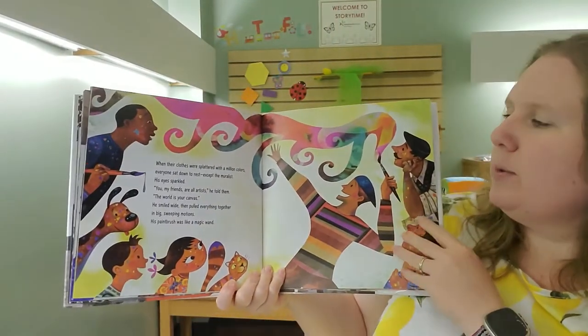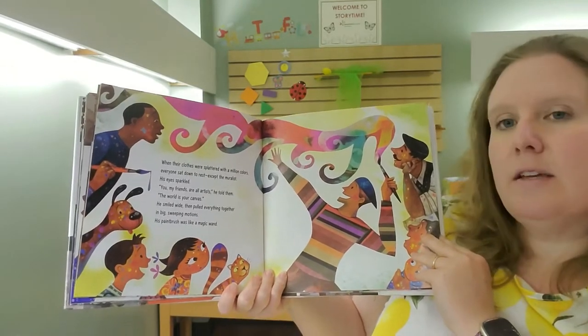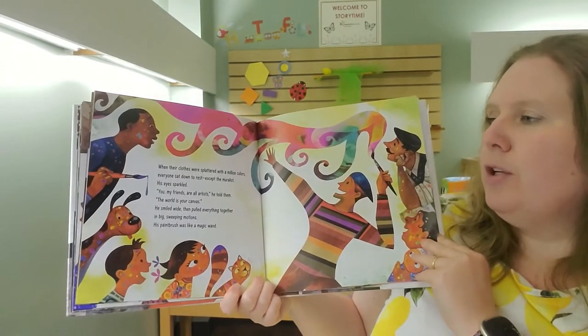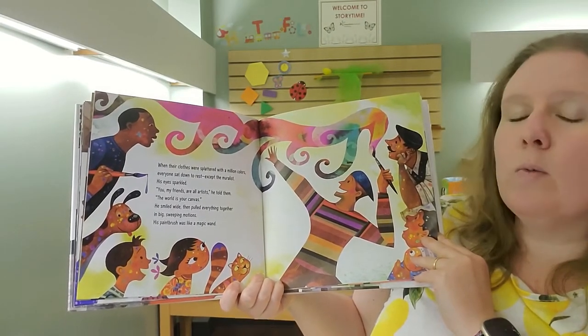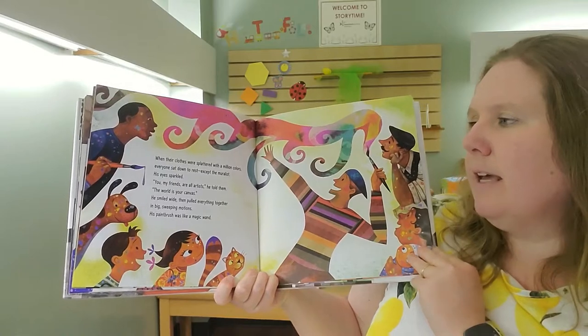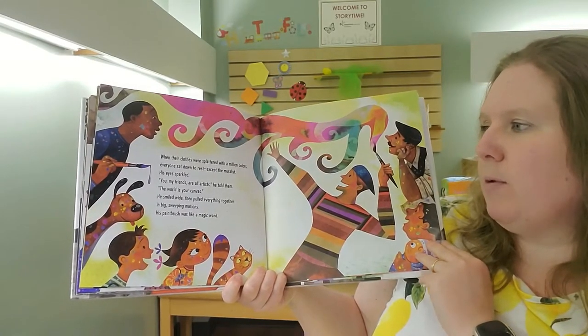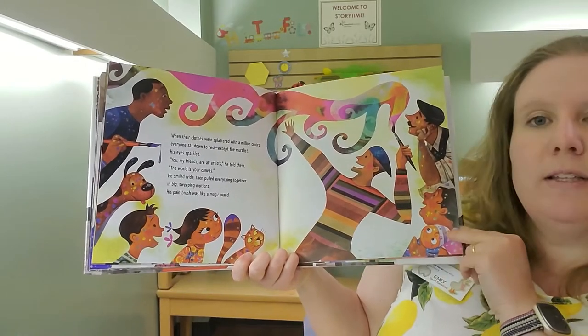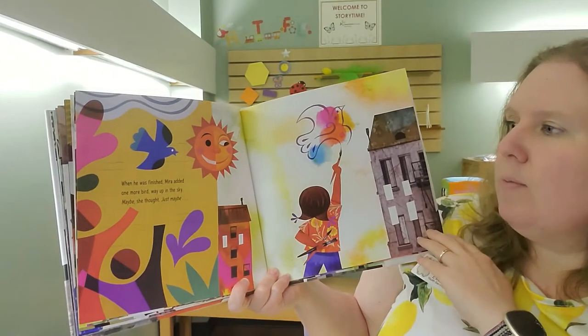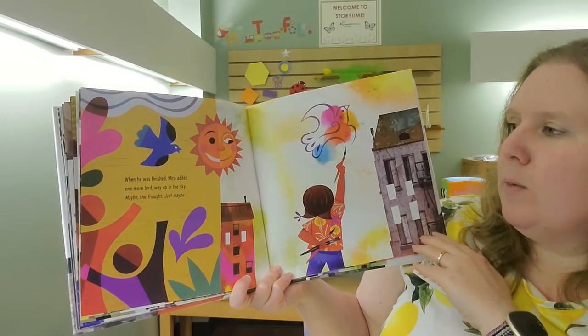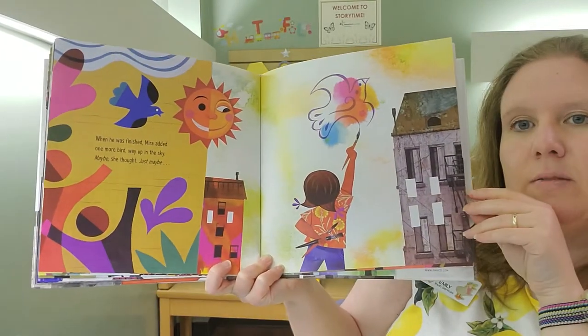When their clothes were spattered with a million colors, everyone sat down to rest. Except the muralist. His eyes sparkled. You, my friends, are all artists, he told them. The world is your canvas. He smiled wide, then pulled everything together in big, sweeping motions. His paintbrush was like a magic wand. When he was finished, Mira added one more bird way up in the sky. Maybe, she thought. Just maybe.